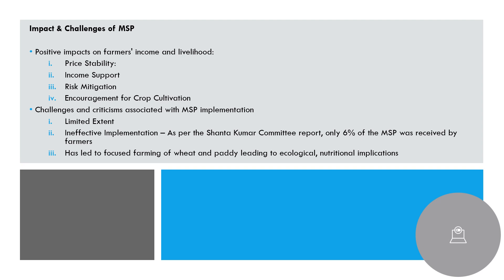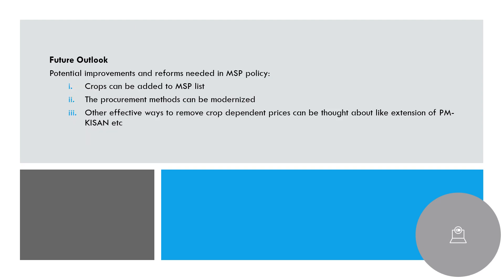There is also the issue of APMCs having a role played by middlemen. For future outlook, other crops need to be added to MSP coverage. We can modernize the procurement mechanism to eliminate middlemen so that farmers gain more. Since adding all crops to MSP would be a fiscal burden for the government, alternatives can be explored — for instance, expanding PM Kisan from the current 6,000 rupees to replace MSP, reducing the government's food grain storage burden. Insurance schemes and other measures can also be introduced.